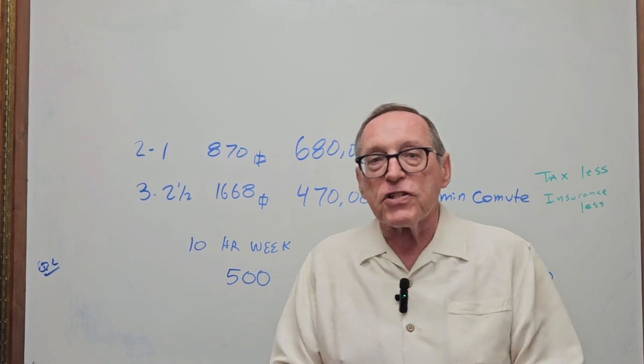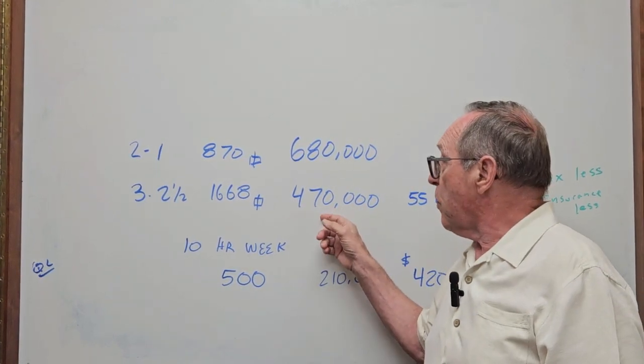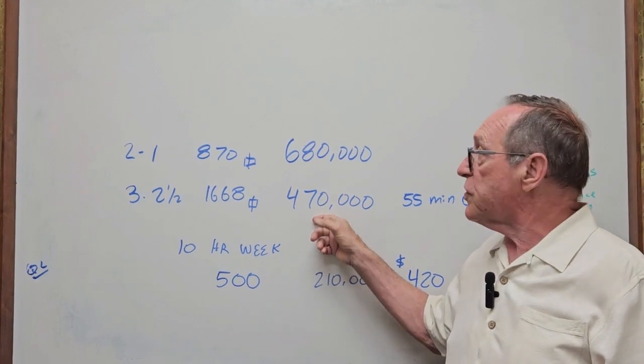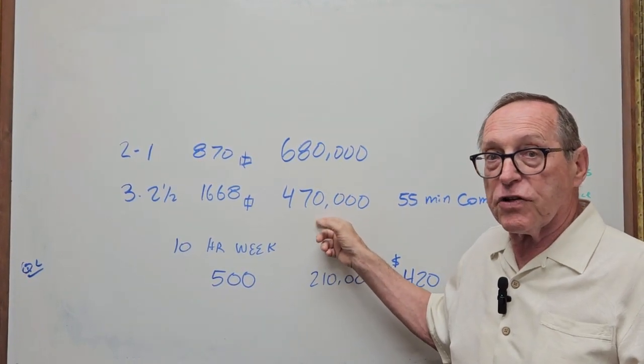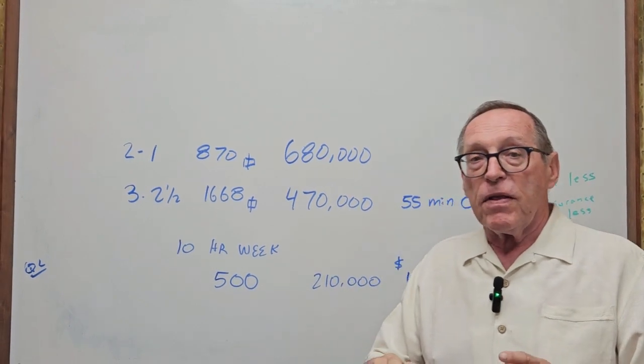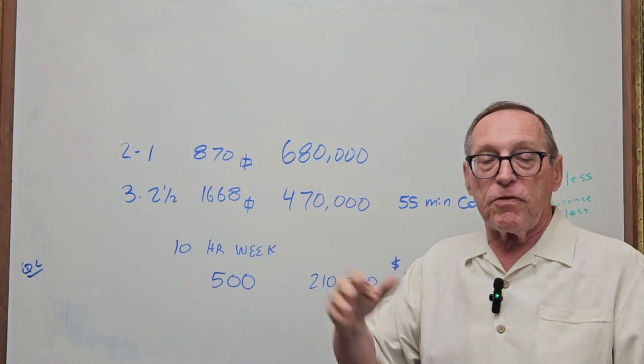The first house is the most difficult house to buy. To qualify for this amount of a purchase versus this amount of purchase is a lot easier. And the person, if they want to come back to the Bay Area eventually, they can sell and move back.